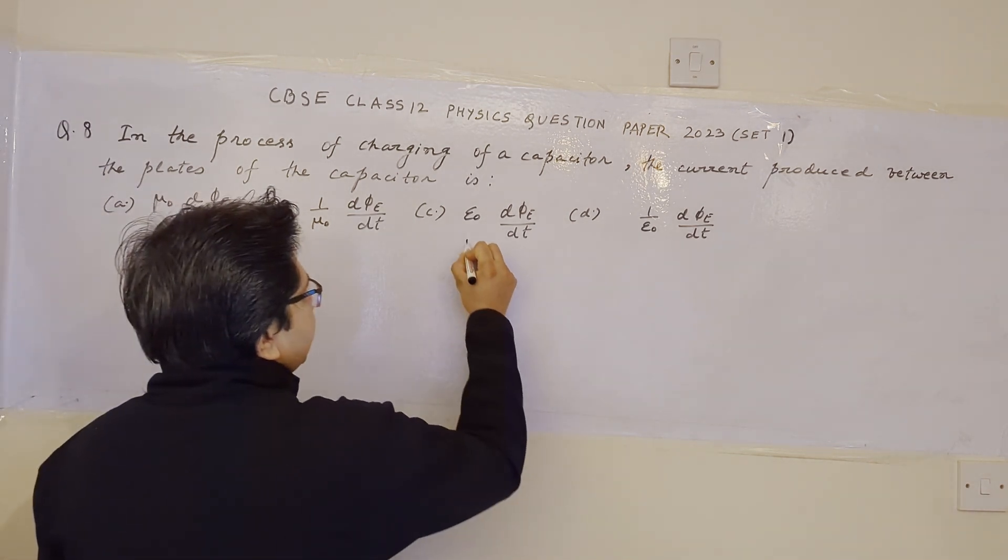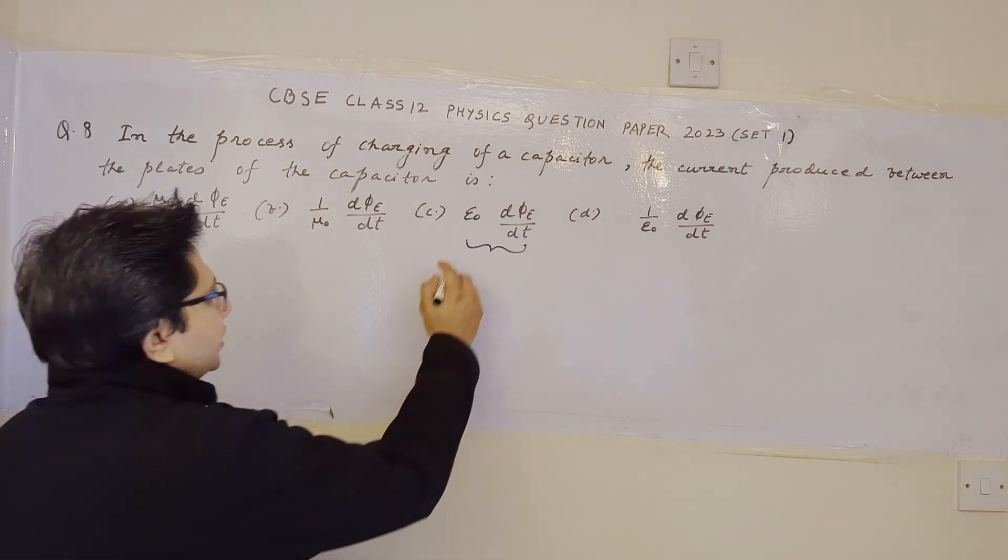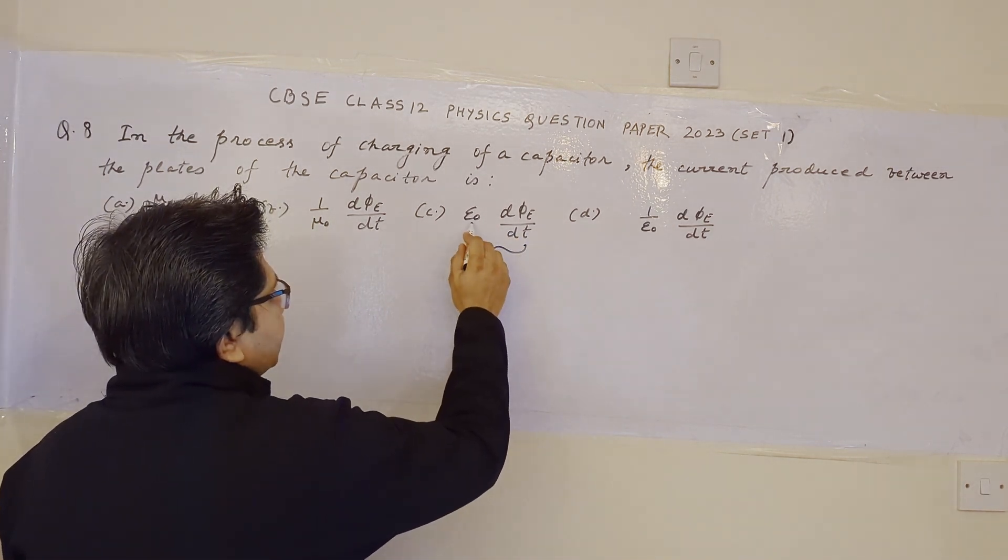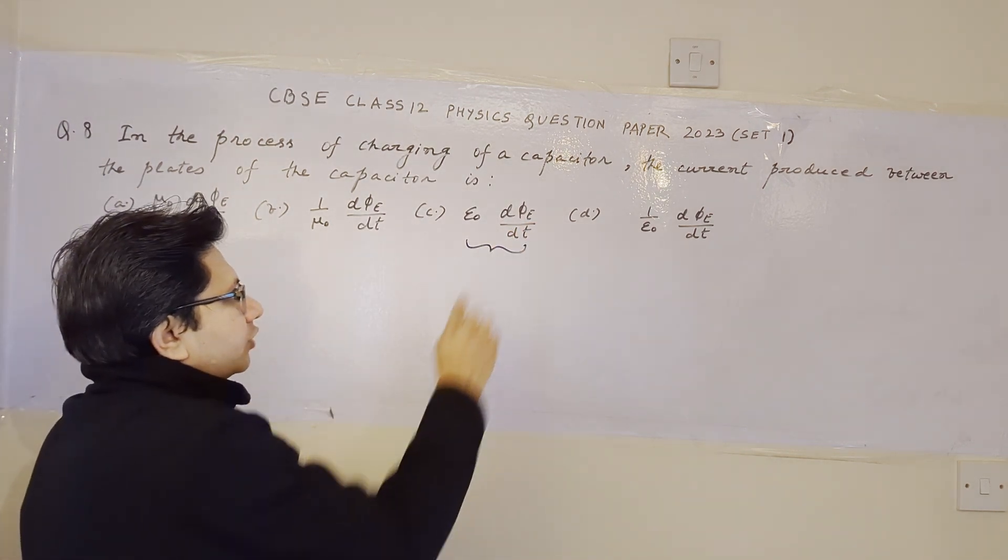So the expression which is correct here is this expression. This is a fact-based question, and you have to remember that the current between the plates of a capacitor is given by this formula, epsilon0 d by dt of phi sub e,